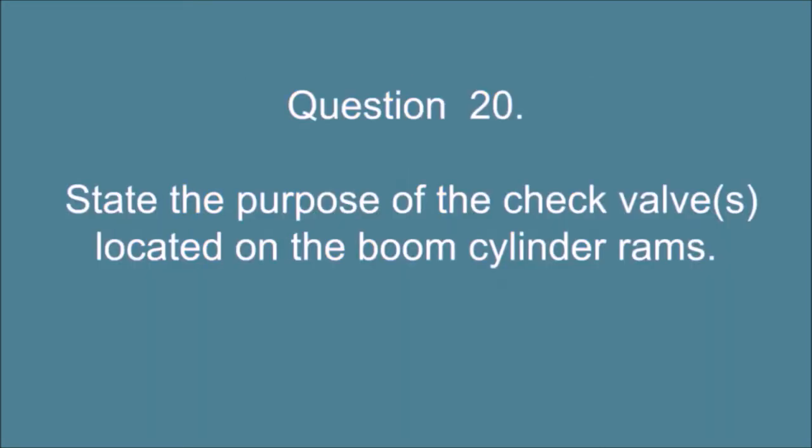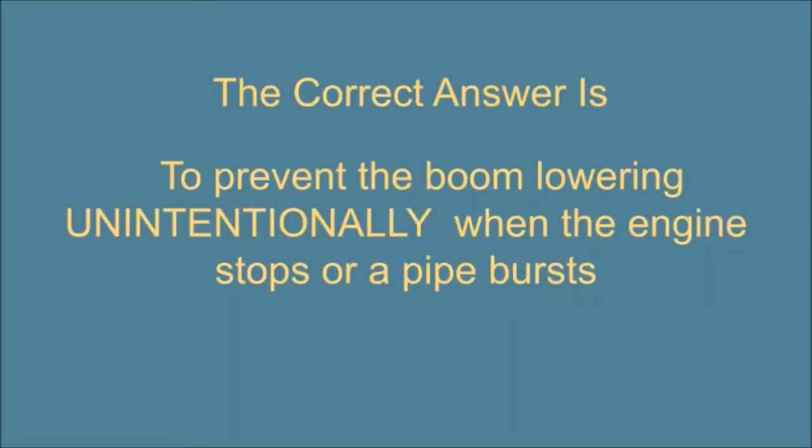Question 20. State the purpose of the check valves located on the boom cylinder rams. The correct answer is, to prevent the boom lowering unintentionally when the engine stops or a pipe bursts.